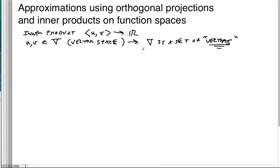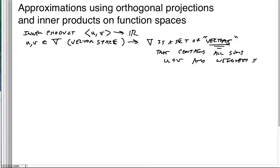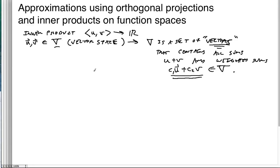It's a set of vectors that contains all sums. I can take constants c1*u plus c2*v and it's also in the vector space. So it's a set of vectors that is closed under addition. If any two vectors are in the vector space, then any linear combination of those vectors will also be in the vector space. You can't add your way out of it.